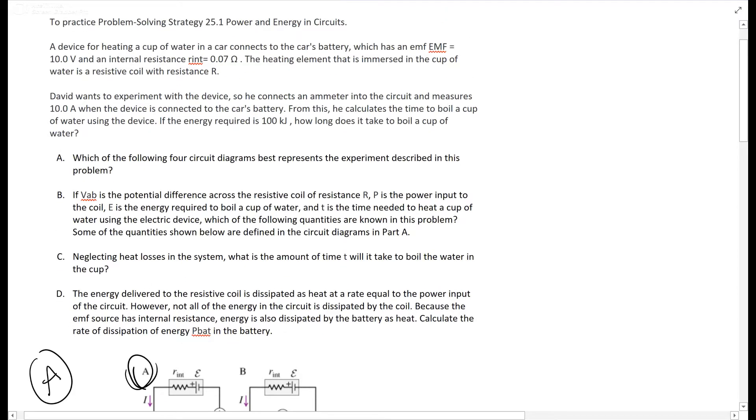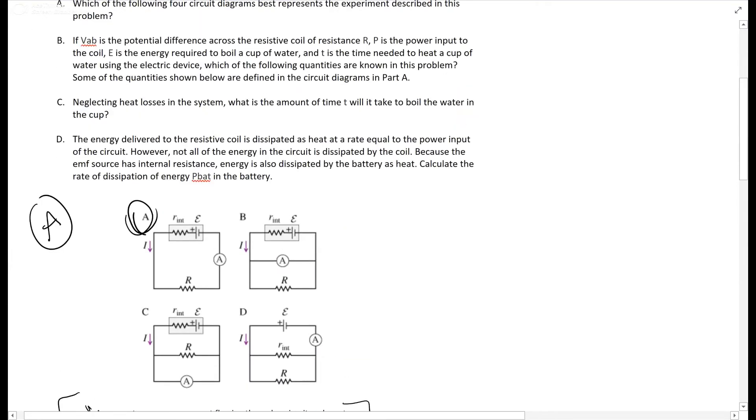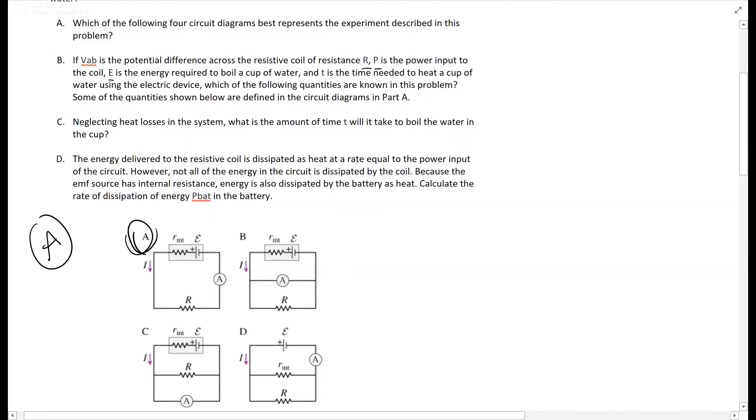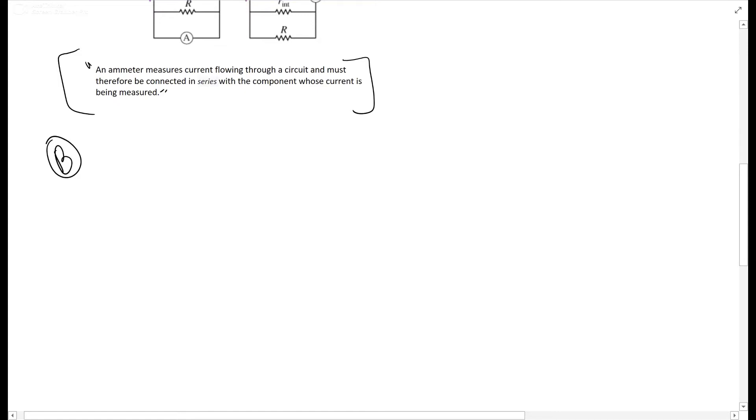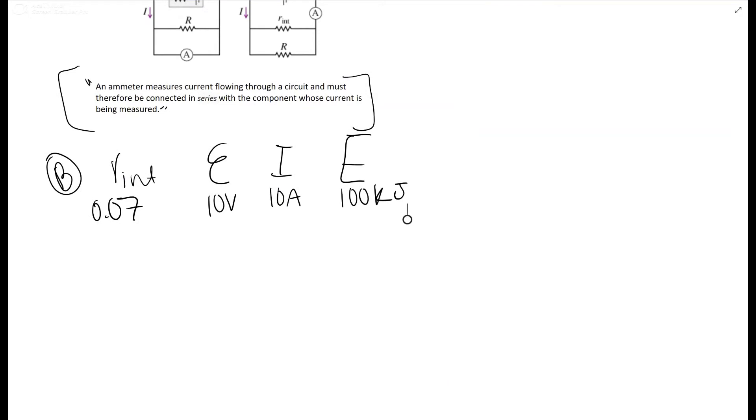Part B gives you the voltage from A to B, potential difference across resistance R, power P, and asks which quantities shown below are defined in the circuit. The way they phrase it makes it sound like they want to know which of all these quantities you can find, but that's not what it wants. It literally only wants the given things: the 0.07, the 10 volts, the 10 amperes, and the 100 kilojoules.